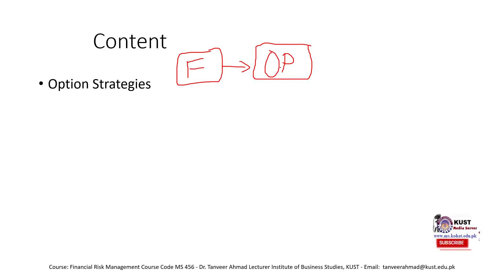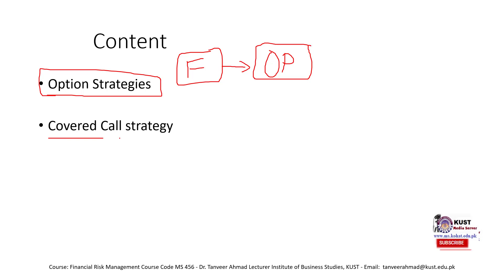To understand that, we first need to develop our understanding of option strategies. There are different option strategies — there are tons of them. We are not going to cover all of them, just five or six strategies. Once we have understood those strategies, using them as the foundation, we are going to develop our concept of finding the intrinsic value of the option. The first strategy we are going to cover in this lecture is the covered call strategy, and once we understand it, the other strategies will be much easier to understand.